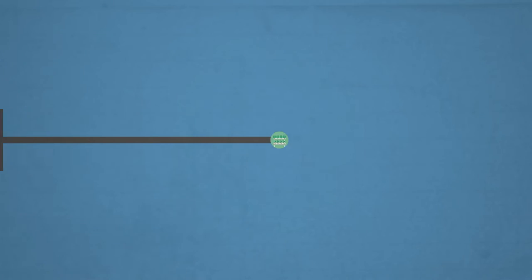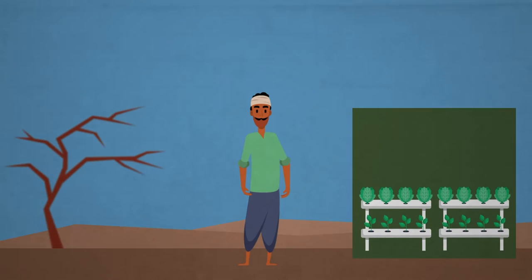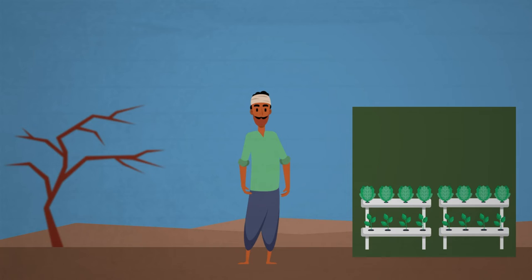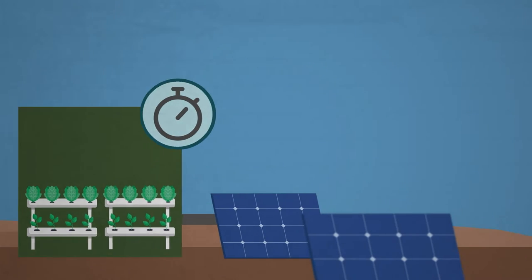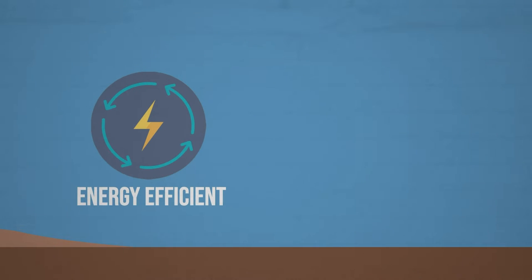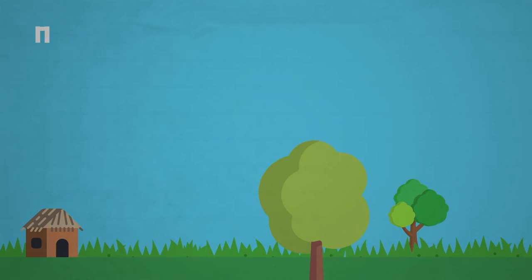Hydroponics fodder production units are ensuring climate resilience and supporting farmer incomes in drought-prone areas. Powered by solar energy and fitted with timers, the hydroponic units are energy-efficient and consume one-fourth the amount of water required by conventional fodder production methods.